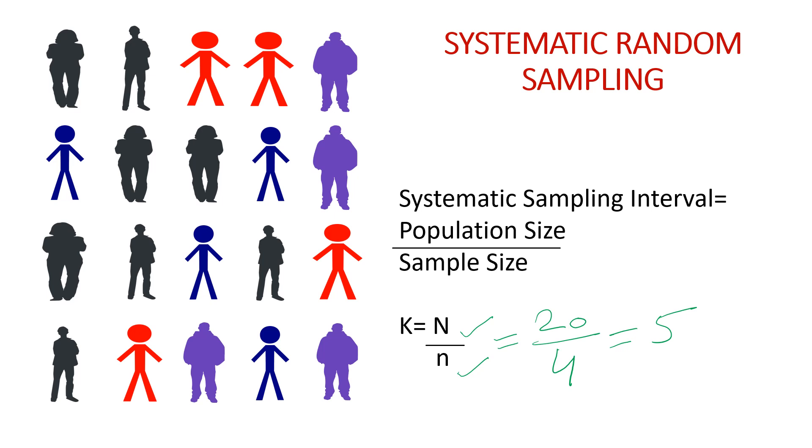Let's mark the 2nd individual as my first sample, this is my first sample, the 2nd individual. Now, giving the fixed periodic interval which is 5, I will choose my next sample. So next is 1, 2, 3, 4, 5, this would be my sample. Again this would be my sample with the fixed interval of 5, and again this would be my sample.